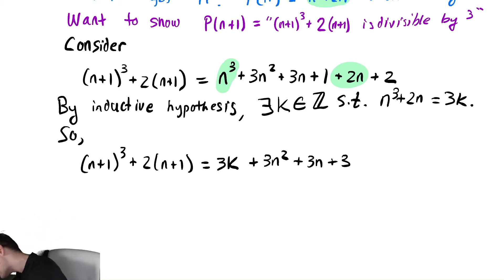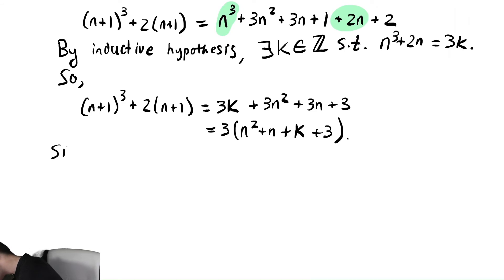So we factor a 3 out, which is 3 times—and then we're going to write it in different order—n² + n + k + 3. And again we might want to comment that that term is in the integers. So since that horrible expression n² + n + k + 3 is in the integers,